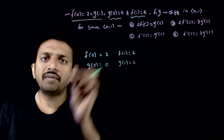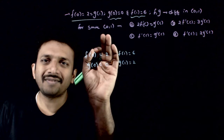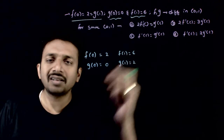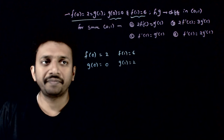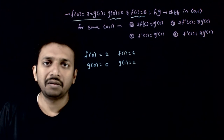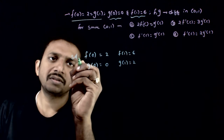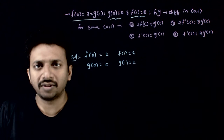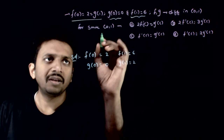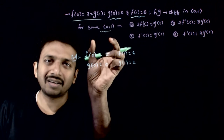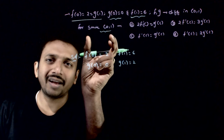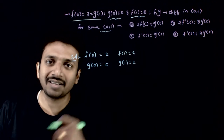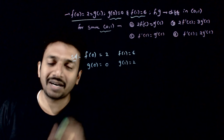In some interval 0 to 1, for some value in the interval 0 to 1, which of these should be valid? That is the question. How do we do this? You can see that this equation is based on Rolle's theorem. In Rolle's theorem questions, between 0 to 1, there should at least exist some condition.